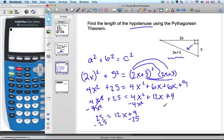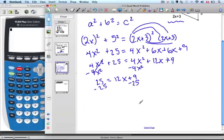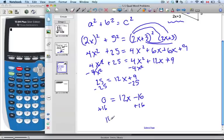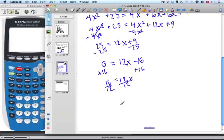So now on this side we have 0 equals 12x minus 16. Now we just have to solve for x. 16 equals 12x. Divide by 12.